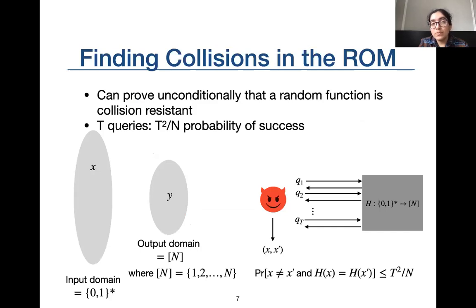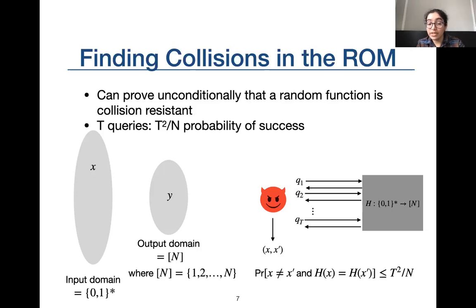From here on, we will always talk about hash functions with output domain [n], which is notation for the set of integers 1 through n. For attackers making T queries, the best any adversary can do is find a collision among the T queries, which has a probability of at most T² over n for an output domain of size n.